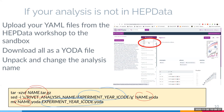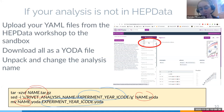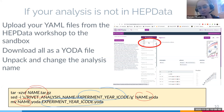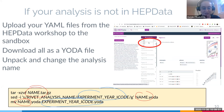The YODA file downloaded from the sandbox has the default placeholder string 'rivet_analysis_name' inside it. When you run the sed command, you leave 'rivet_analysis_name' as the search string and replace it with your EXPERIMENT_YEAR_ICODE. You also replace the garbled sandbox filename (name.yoda) with your analysis name dot yoda. The items in italics are what you replace — everything else stays the same.